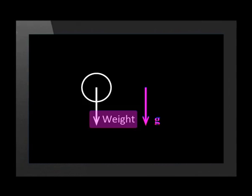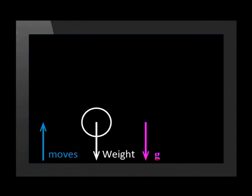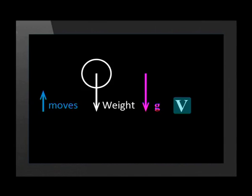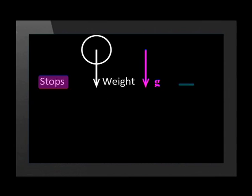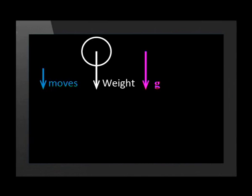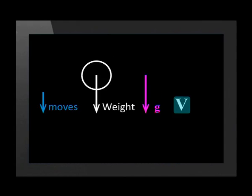Throughout free fall, the ball accelerates at the acceleration due to gravity, G. This acceleration is in the same direction as the force which causes it — downward. While the ball moves up, it moves in the opposite direction to its acceleration, making it go slower and slower until it stops. It stops only for an instant; although the ball's velocity is zero for that instant, it's still accelerating at G. While the ball moves down, it moves in the same direction as its acceleration, making it go faster and faster.